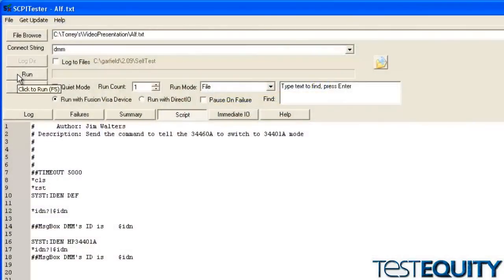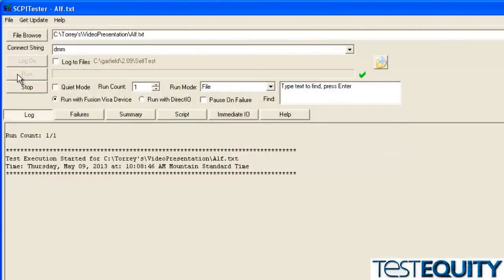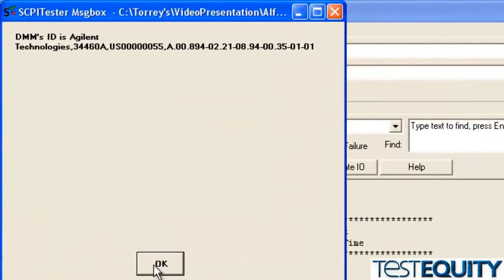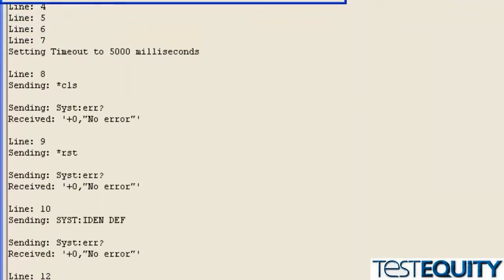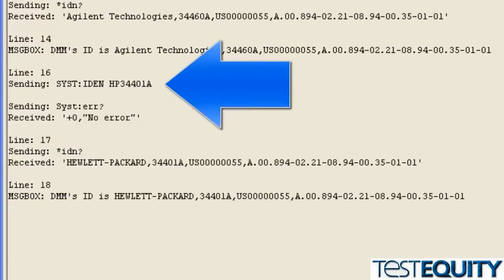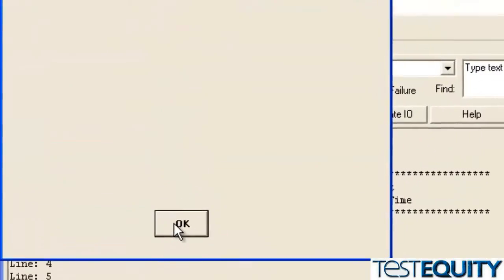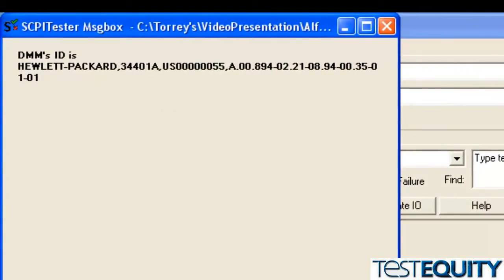Okay, now I've sent commands to the box asking what its identification is, and it's coming back and telling me that it's an Agilent 34461A. Now I'm going to reprogram it to be a 34401A for compatibility with older systems. And I've just sent the command, and I've asked the box what its IDN is, and it's coming back as a Hewlett Packard 34401A.